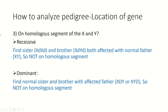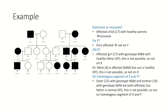If the trait is dominant, I have to find a normal sister and brother whose father is affected. If the father is affected with genotype X-D Y-D, at least one sibling should be diseased. If this is not the case, it is not on the homologous segment of X and Y, and then it's on an autosome.